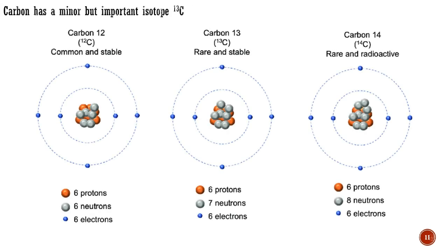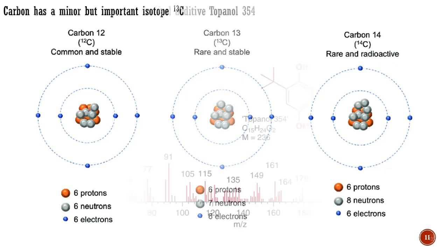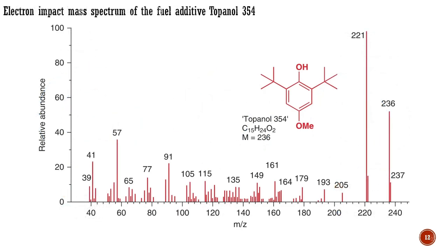The minor isotopes of many elements that appear at below the 1% level are not usually important, but one we cannot ignore is the 1.1% of carbon-13 present in ordinary carbon, of which the main isotope is carbon-12. The stable isotope carbon-13 is not radioactive, but it is NMR-active, as we shall soon see. If you look back at all the mass spectra illustrated so far, you will see a small peak one mass unit higher than each peak — these are peaks arising from molecules containing carbon-13 instead of carbon-12.